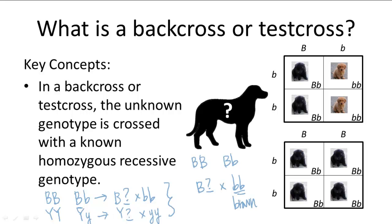So based on the offspring, the dog breeder can work backwards to tell whether his black dog is homozygous dominant or heterozygous.